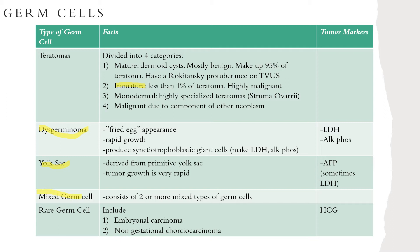Teratomas are the most common type of germ cell tumor, divided into four categories. Mature teratomas, otherwise known as dermoid cysts, are most of the time benign and account for over 95 percent of all ovarian teratomas. Malignant transformation can occur in 0.2 to 2 percent of mature teratomas. On histology, these tumors can contain ectoderm, mesoderm, and endoderm. Questions may refer to a Rokitansky protuberance on transvaginal ultrasound.